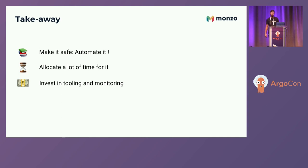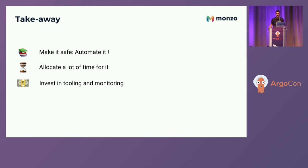Key takeaway: make it safe, automate it — automation lets you enforce additional safety rules. If you have 10 or 20 applications you can do it by hand, but at sufficient scale it's worth adding automation. The migration itself — the act of migrating slowly and carefully — is what took the most time. In terms of overall effort, probably half the time was just running the migration after we had built everything.